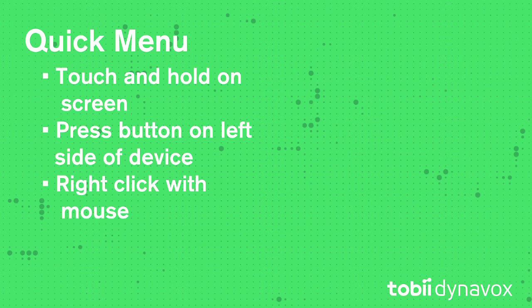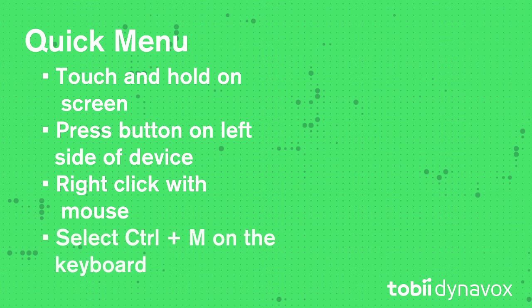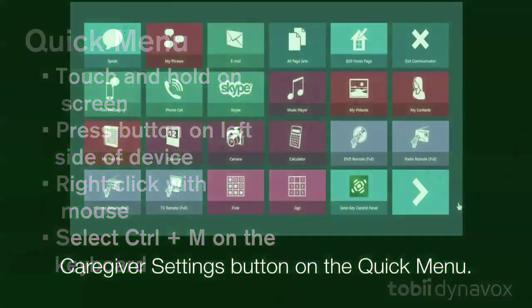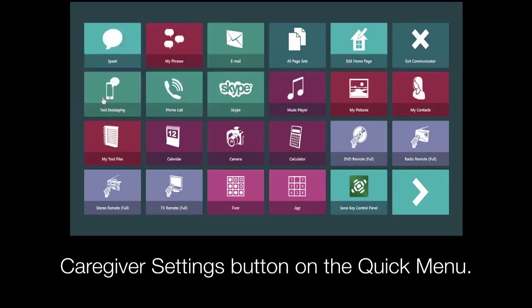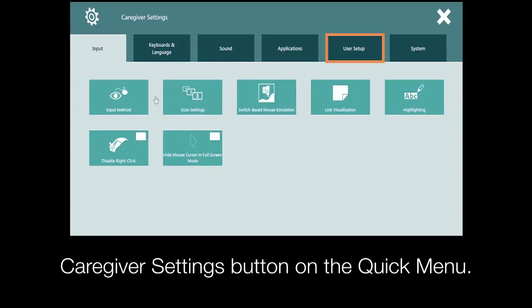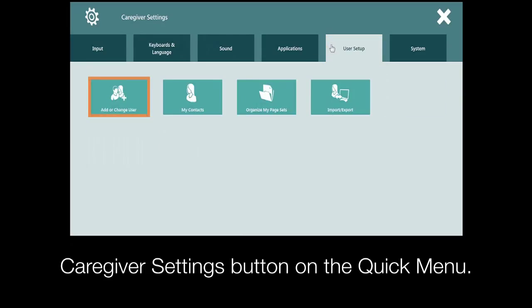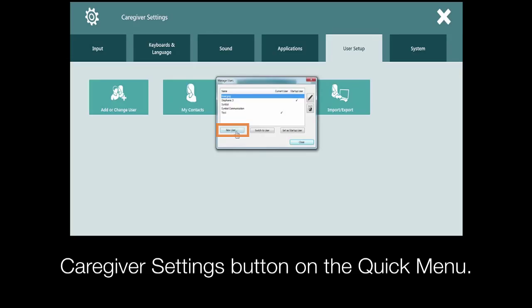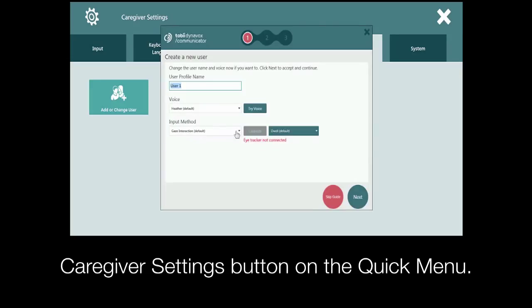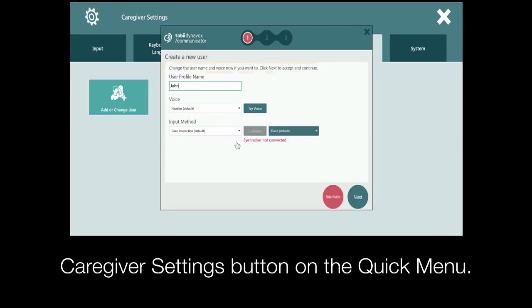You can right-click if you're using a mouse, or select Ctrl-M on the keyboard. Select Caregiver Settings and then select the User Setup tab. Select Add or Change User and then New User. This will launch the Getting Started Guide. Simply follow the prompts on the screen to begin the process of creating a new user.